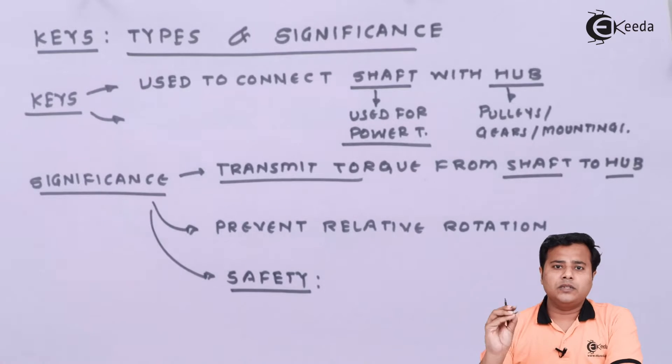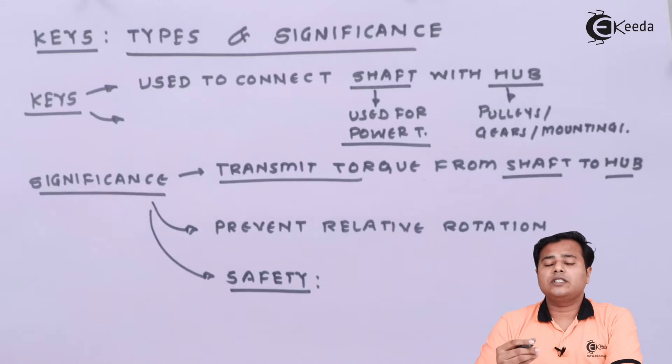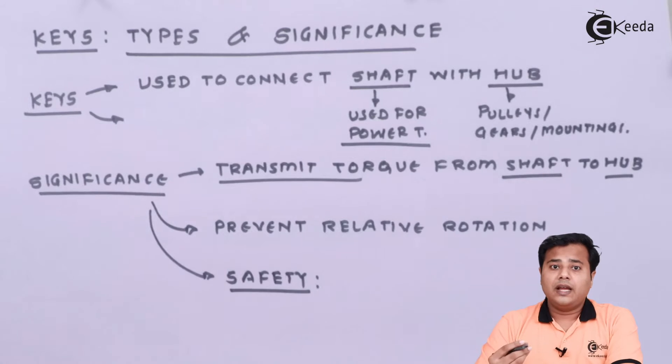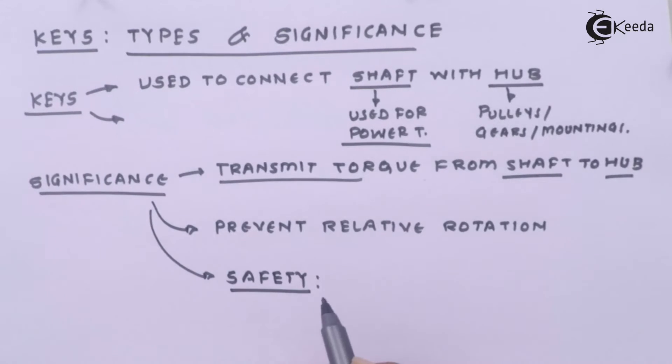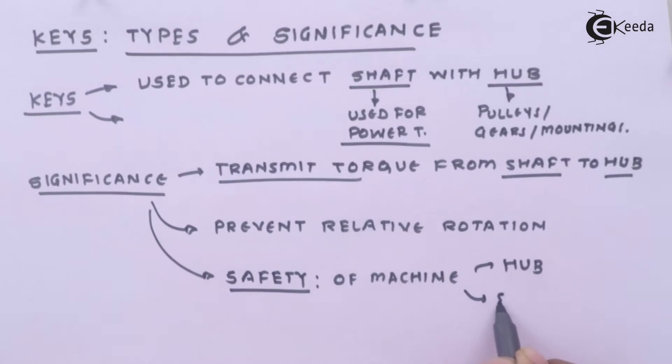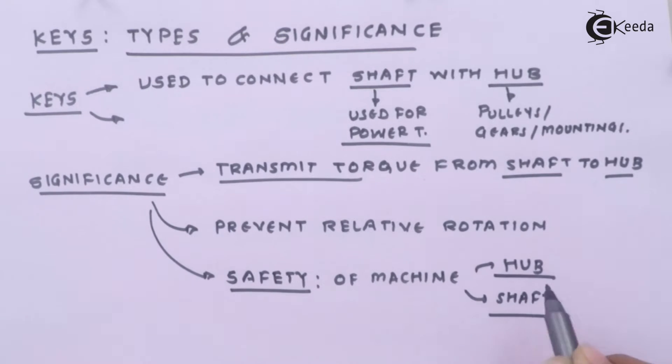Keys is the member which will not have that much cost. So we embed the key inside them so that when the failure occurs, failure will occur for the key and not the main part like hub or shaft. So safety of machine, specifically hub or shaft. That is how the product can be saved. So that was the significance of keys.